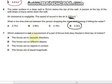Question 7 says which statement is not a requirement of a pair of forces that obey Newton's third law. For Newton's third law, the forces act in opposite directions, that's correct. The forces act on different objects, that's correct. The forces act on objects in contact, that's not correct. The forces are of equal magnitude, that's correct. So C is the appropriate answer.